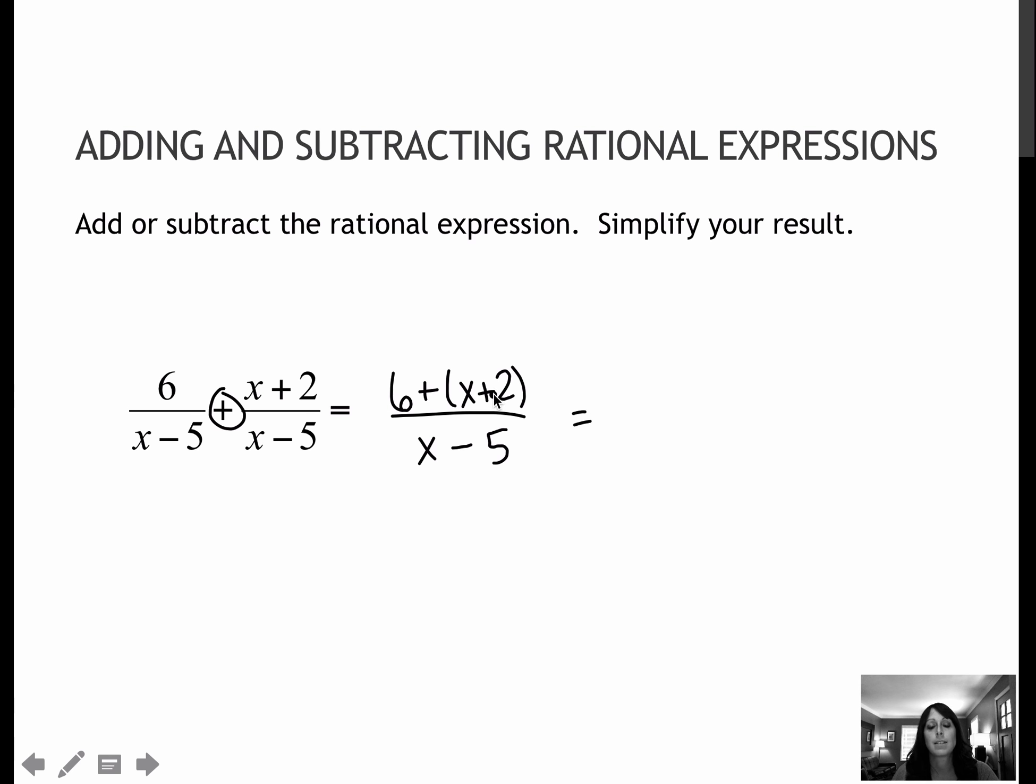Not necessary for a plus. 6 plus x plus 2, I would add the 6 and the 2 together, which would give me 8 plus x over x minus 5. I could also write that as x plus 8 over x minus 5. Please keep in mind that these two x's do not reduce. x is a term, it isn't a factor, it isn't being multiplied by everything. So my final answer is x plus 8 over x minus 5. I can't reduce that to negative 8 fifths.